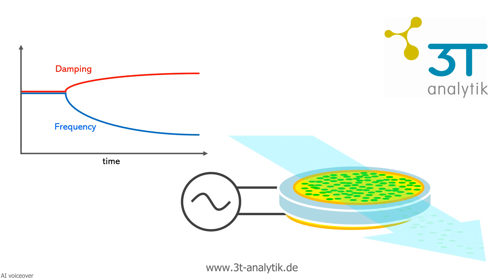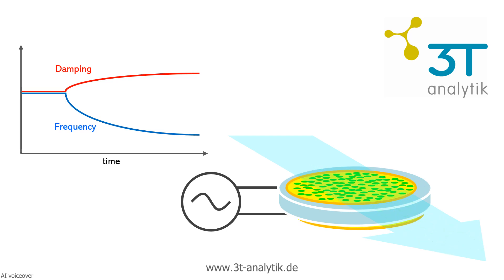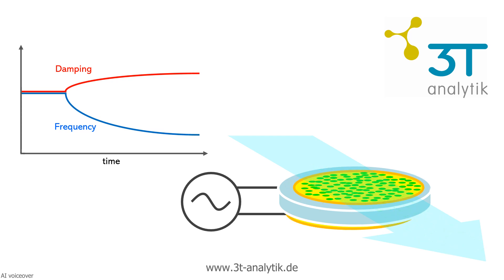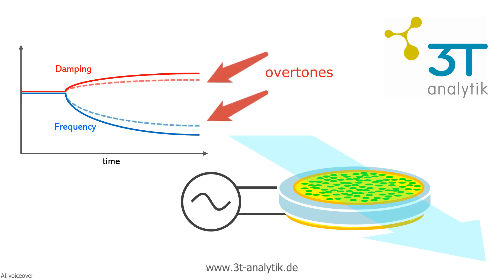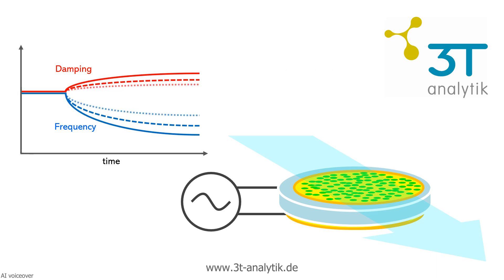QCMD instruments from 3T Analytic measure frequencies from 5 to 50 megahertz, allowing us to monitor several harmonics, called overtones. Today, we'll keep it simple and focus on a single resonance.